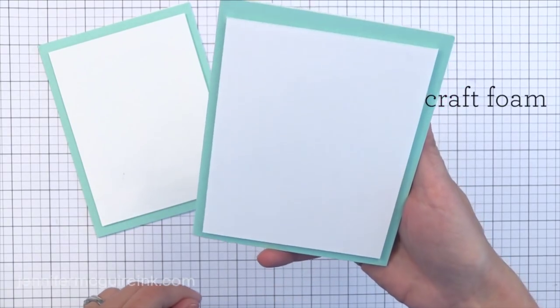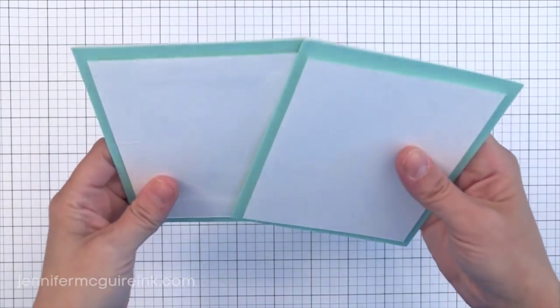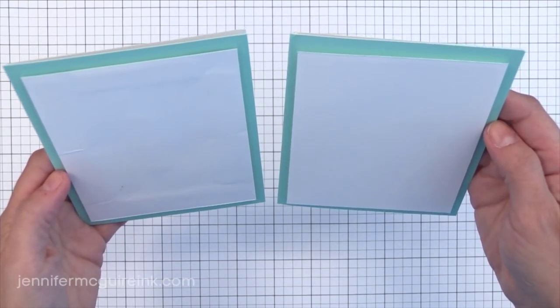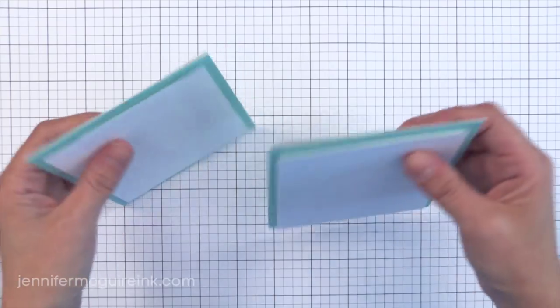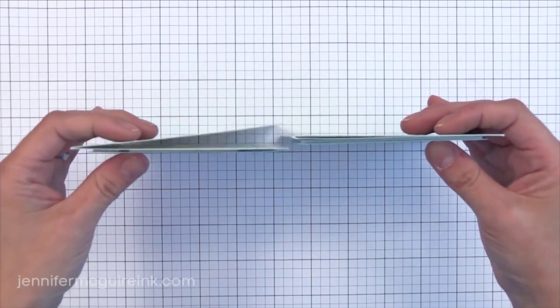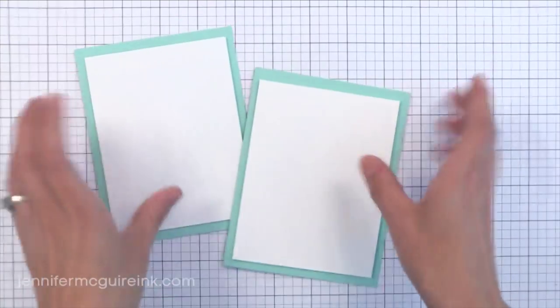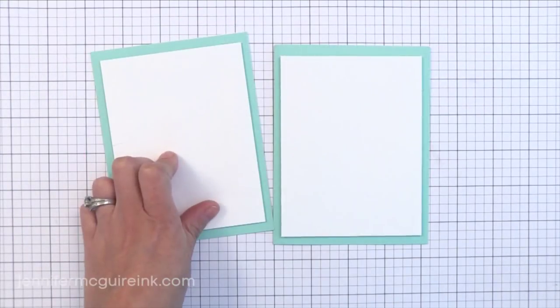So whenever I'm adding a big piece of card stock to the front of my note card I use craft foam behind it. You can see there's quite a big difference here when I tilt it up to the light between how they ended up going through the mail. They have about the same thickness. You can see they have about the same dimension. But the one on the right held up much better. The one with the craft foam.